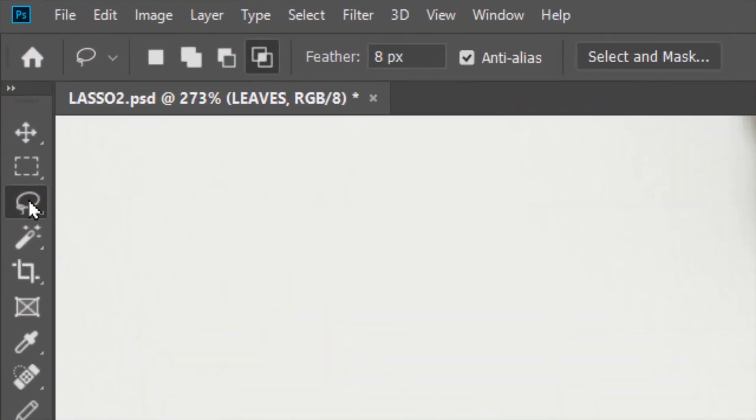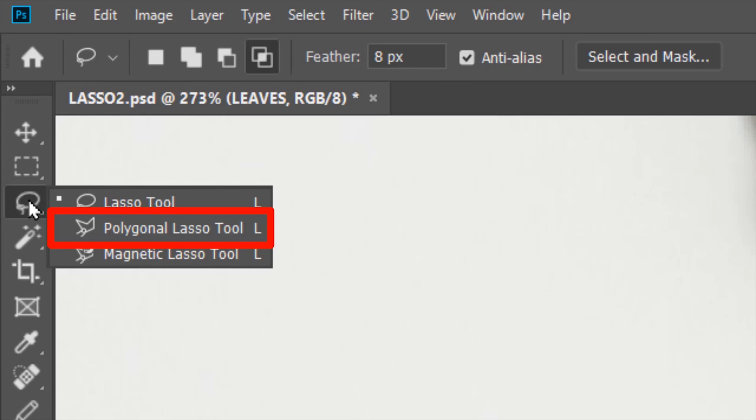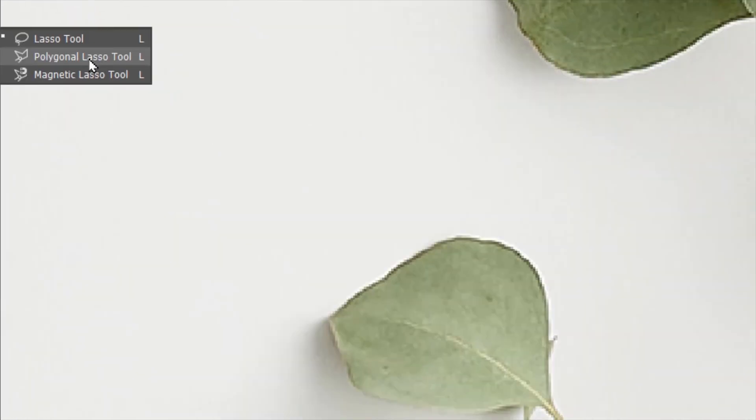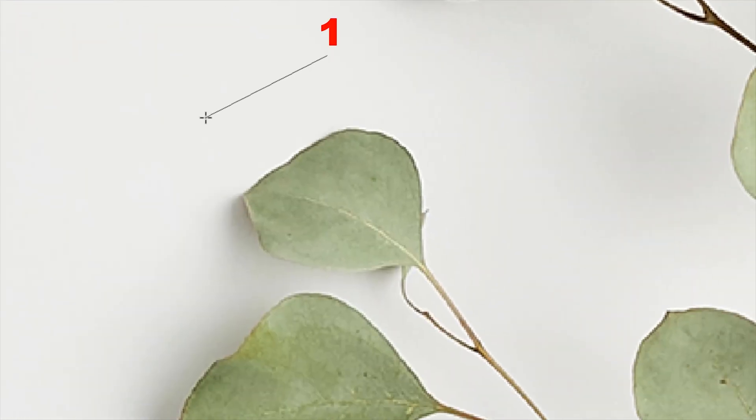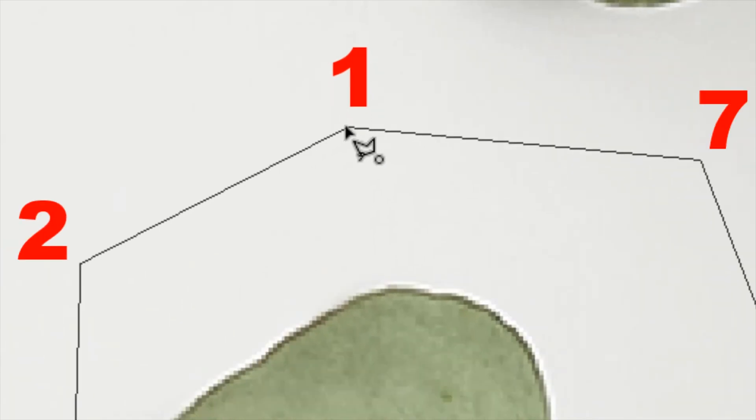Next we'll look at the polygon lasso tool. With the polygon lasso tool, you click many points to make a polygonal selection. You can complete or close the selection by going to the starting point where you see a white circle, which is when you click and close it.